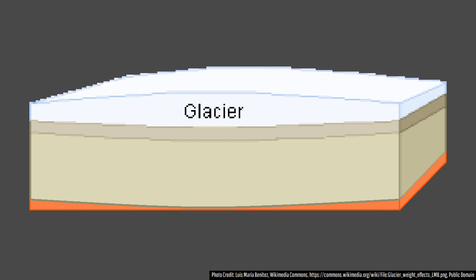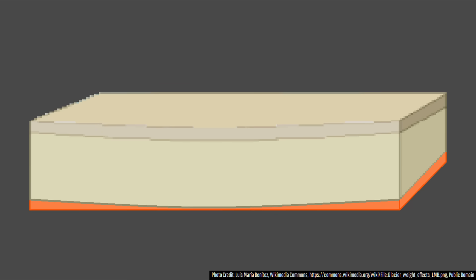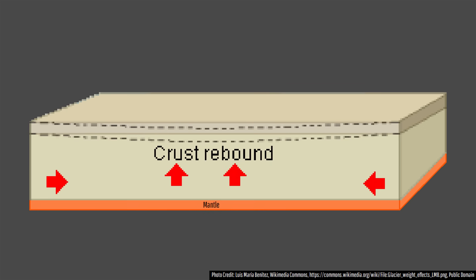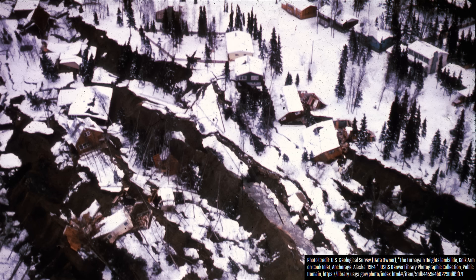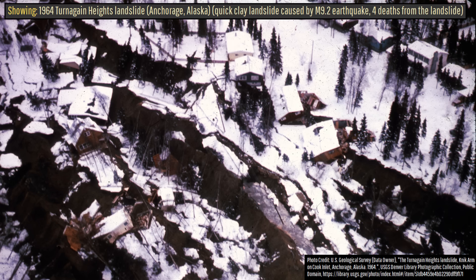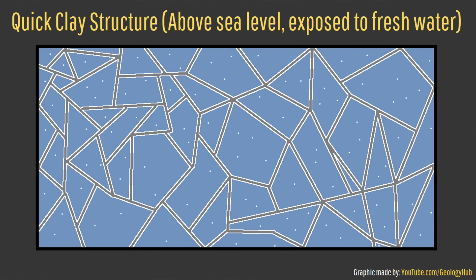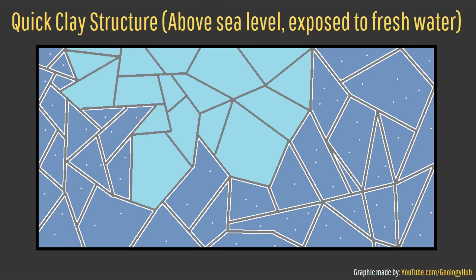And this is where some quick clay was deposited in a stable form. Yet, once the ice sheets greatly diminished or vanished altogether as the Pleistocene transitioned to the Holocene epoch, the land began to rise back upwards in a process known as post-glacial rebound. As a result, large areas of quick clay rose above sea level, and over time — or sometimes fairly quickly if there is a triggering mechanism — the salt water within the quick clay was replaced by fresh water.